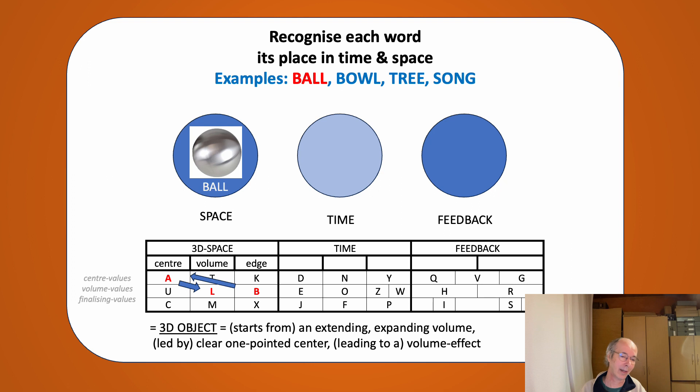Then I come to a center, a center point. So this center of the word also has a central point. It has a clearly one pointed center. To L. The L is in the volume values, in the volume, so it is about volume. It starts with the expansion of volume and it ends with volume in the center. And this describes a ball. Purely logic, purely proof that the theory works and that it is no fantasy.